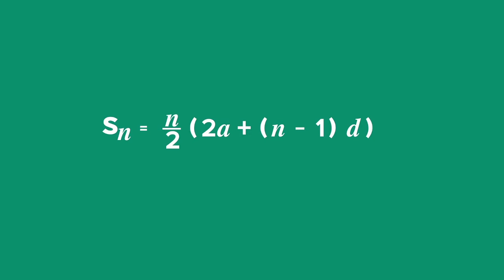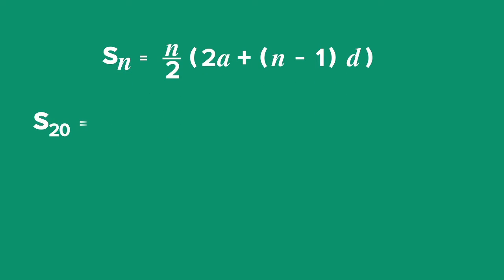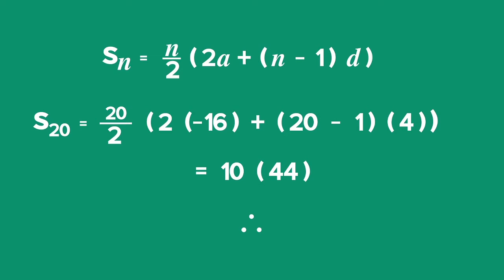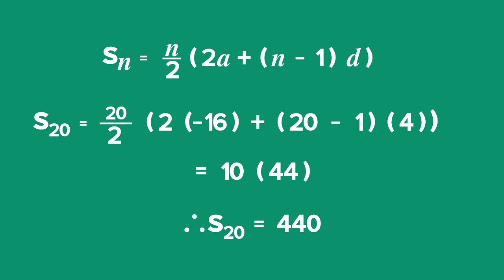Substituting the values for A, D, and n: the sum of 20 terms is equal to half of 20 into 2 lots of negative 16 plus the result of 20 minus 1 multiplied by 4, which is equal to 10 times 44. Therefore, the sum of 20 terms is equal to 440.